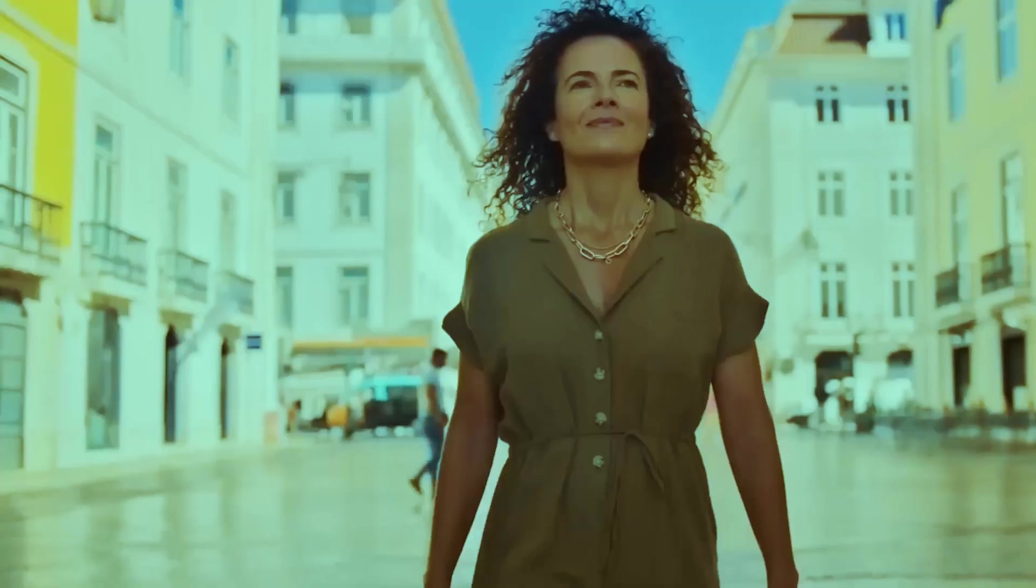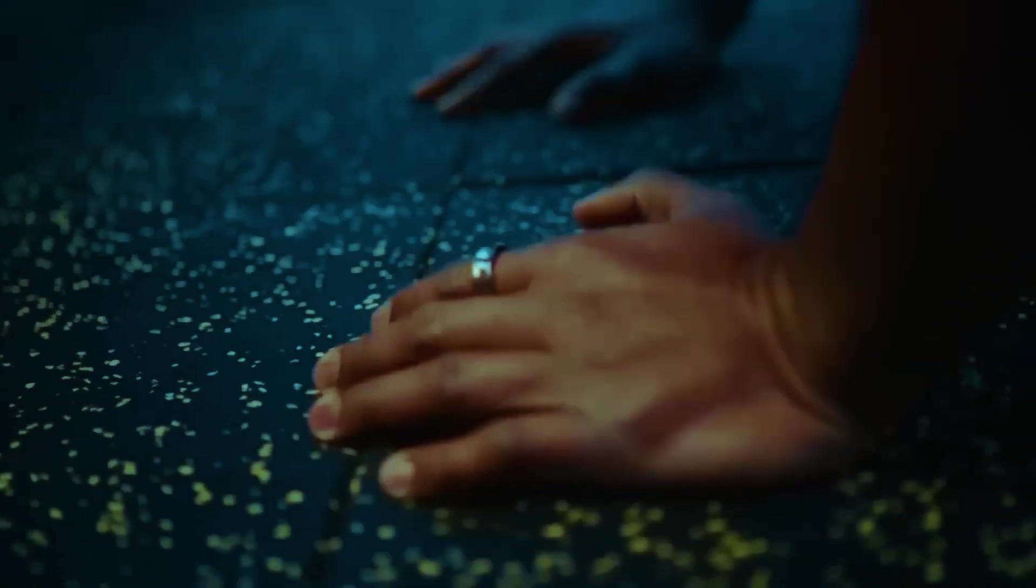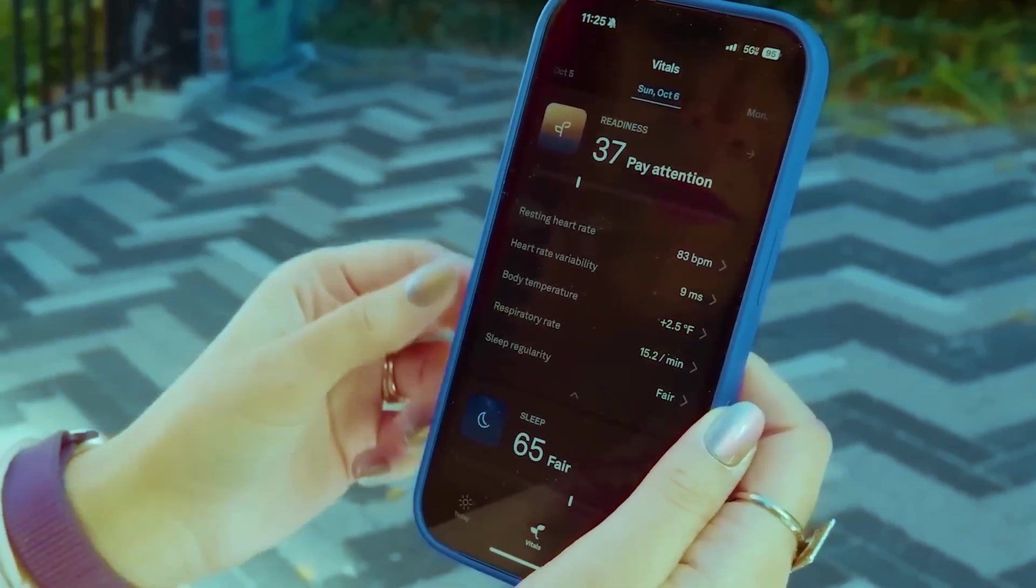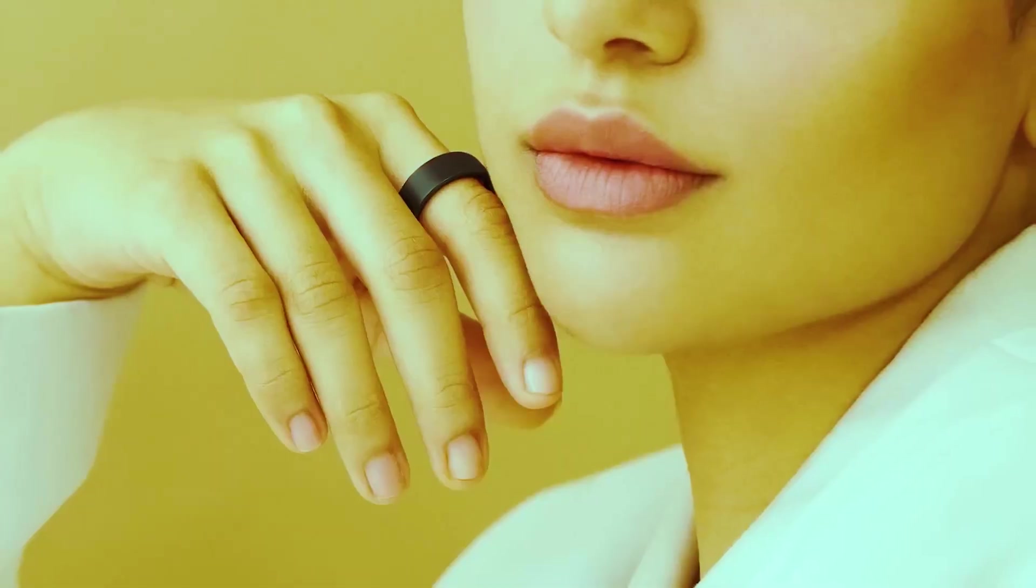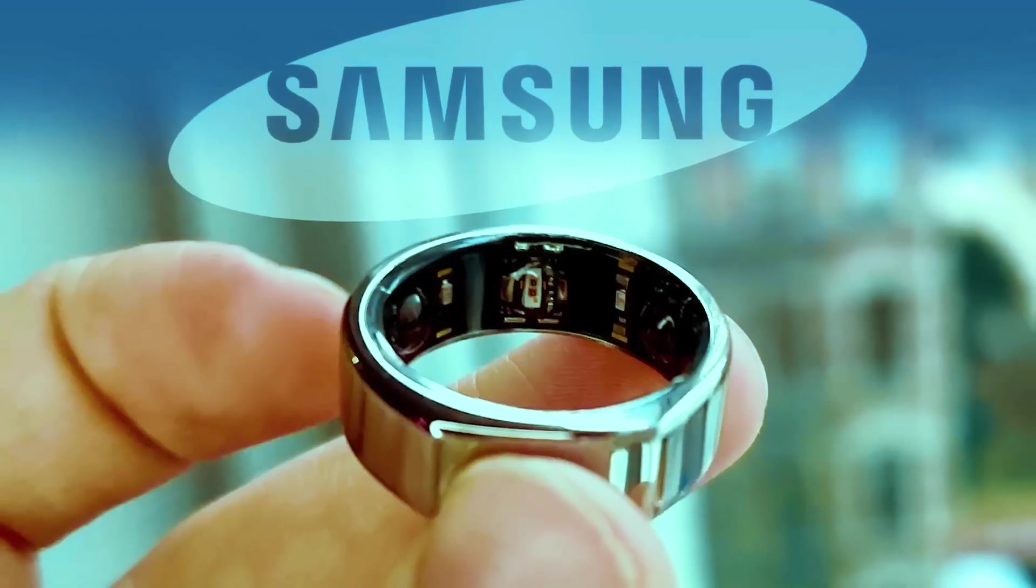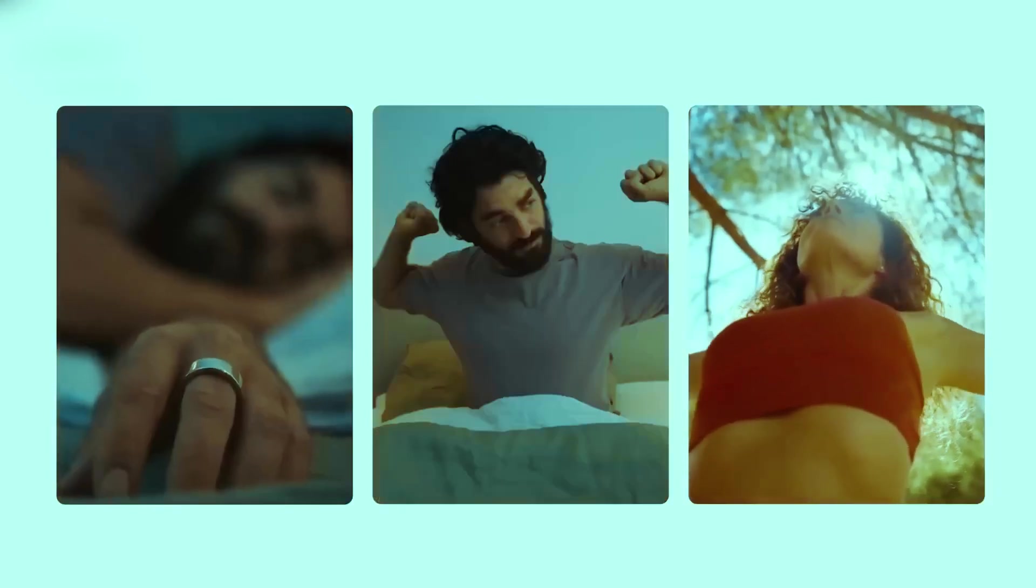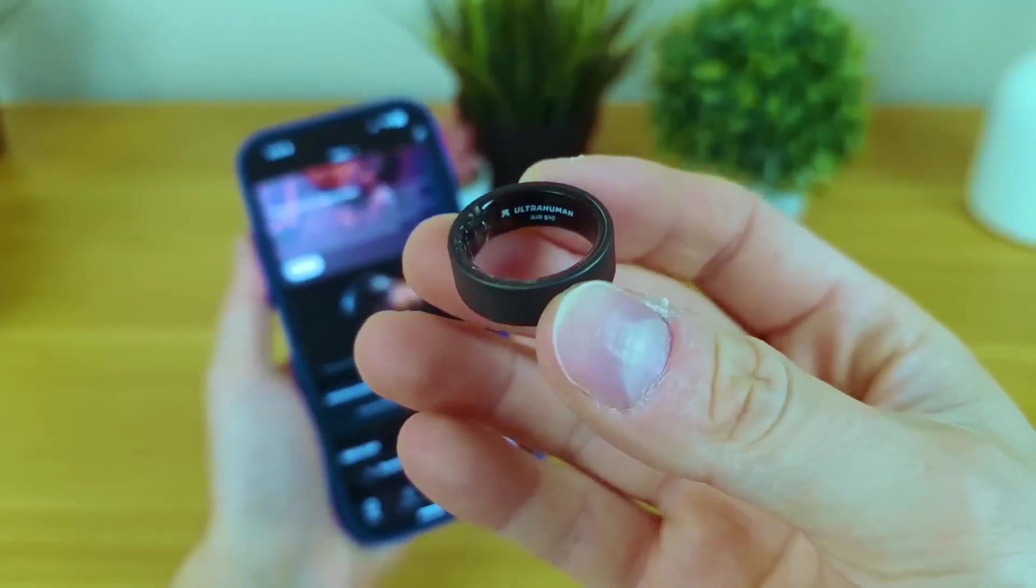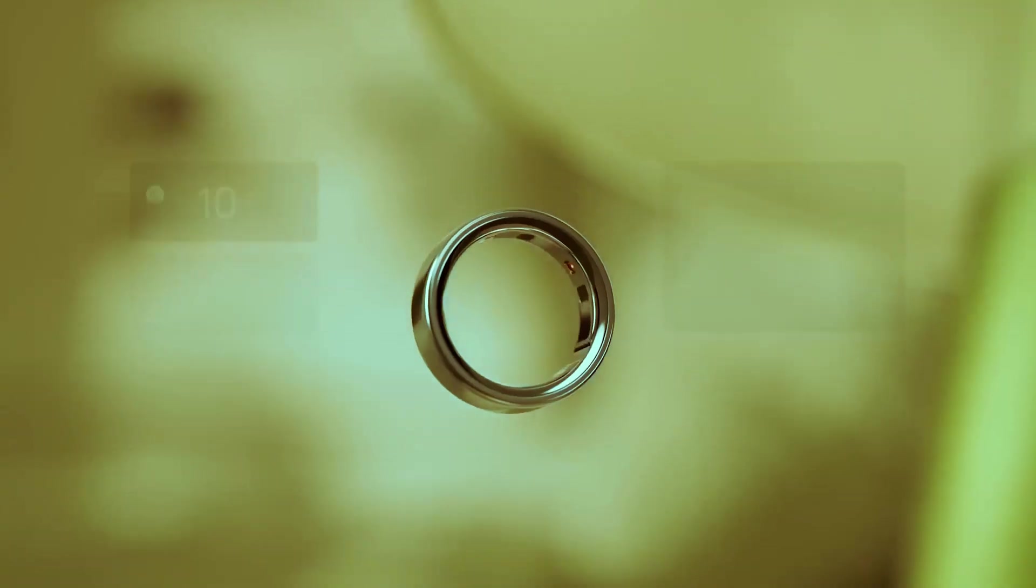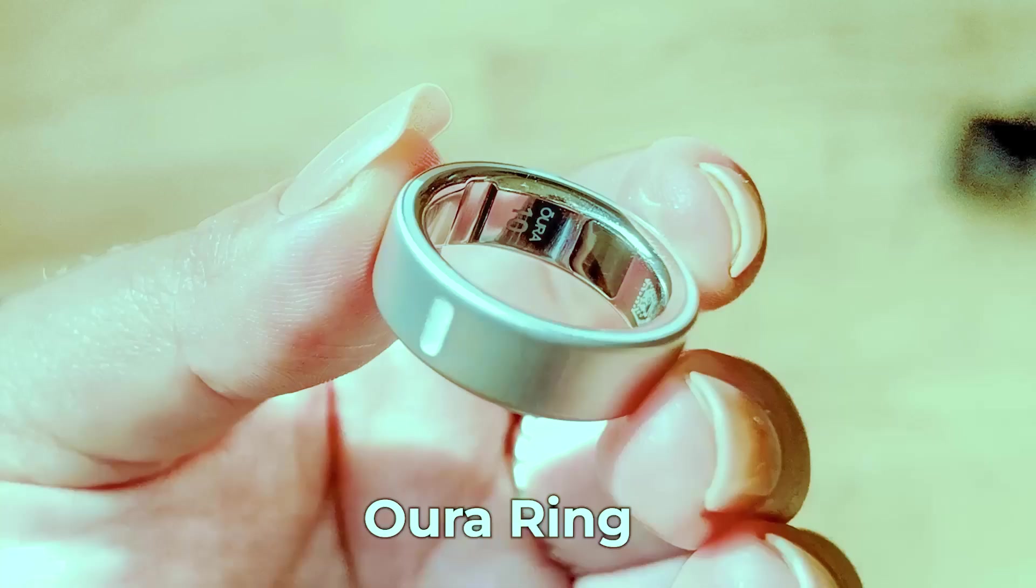Society begins to fracture under the influence of the smart ring. Some users worship it as an infallible health guardian, convinced that it saves lives and prevents catastrophes before they happen. They follow its suggestions blindly, trusting the device more than their own instincts or doctor's advice. But for others, doubt gnaws at the edges. What happens when dependence on a device that knows more about your body and subtly shapes your choices becomes absolute? Experts warn of a new kind of vulnerability: a generation growing incapable of making decisions without digital guidance. Families argue over whether to rely on the ring or traditional medicine. The world stands at a crossroads: trust in a machine or reclaim human judgment and autonomy.